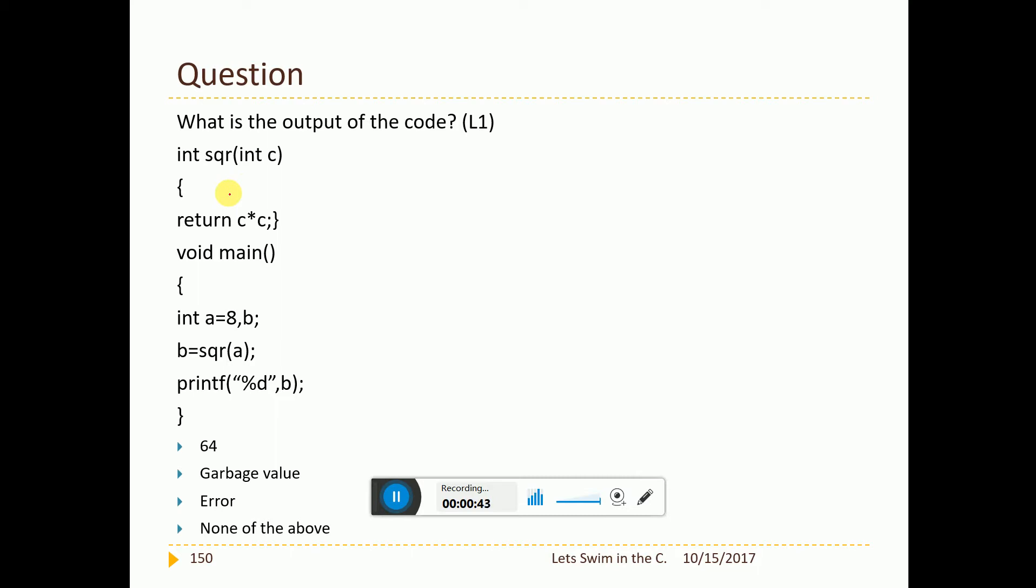Now, int square int C, return C*C. This is the function definition. And what are we doing in the main? A equal to 8, int B. B equal to square of A. So what will you do here? The moment you call square of A, it will go here. And what are you passing? You are passing A as an argument. The arguments A's copy will be collected in C. So 8 will come here. 8 into 8 would be 64. Now 64 is the return that you are making here, C into C. And that return can be collected here in B.